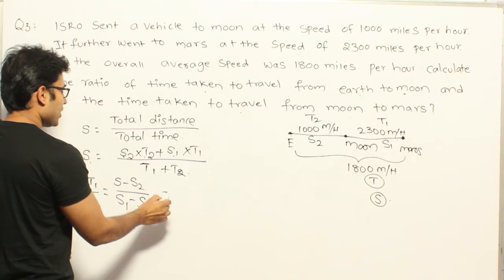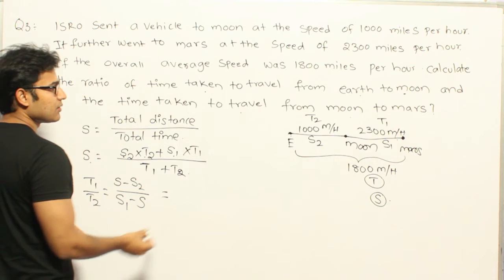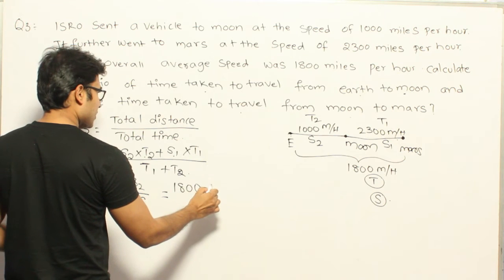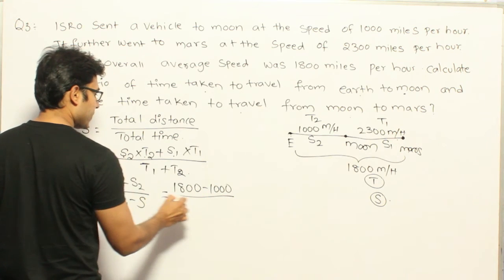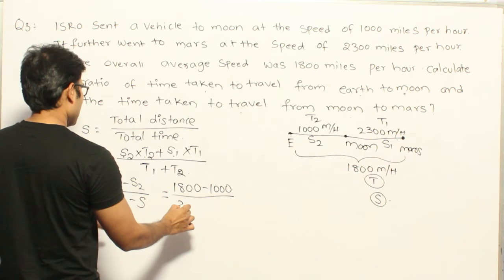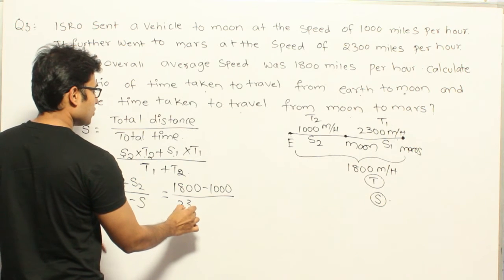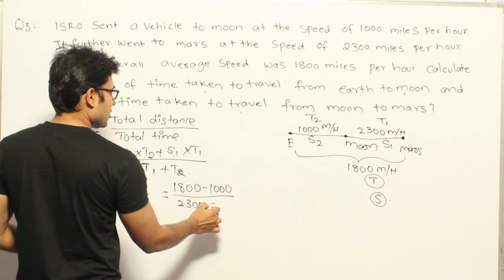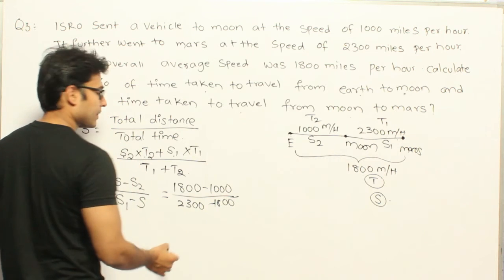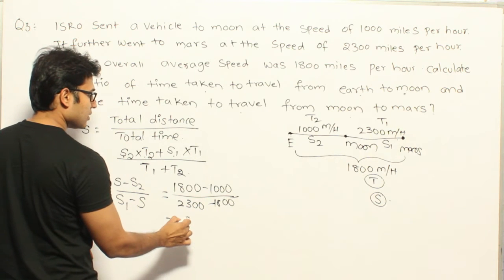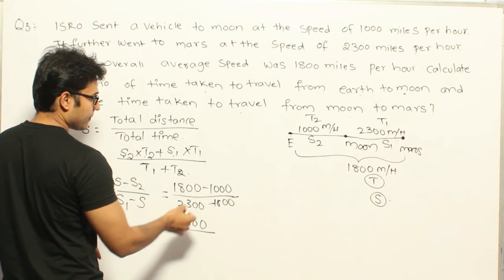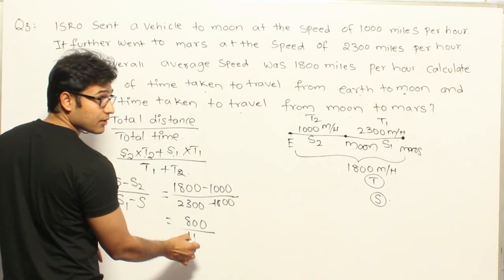The average speed S is given as 1800. So T1 by T2 equals 1800 minus 1000 divided by 2300 minus 1800, which is 800 divided by 500, giving us 8 to 5. Wait — S minus S2 is 1800 minus 1000 equals 800, and S1 minus S is 2300 minus 1800 equals 500.